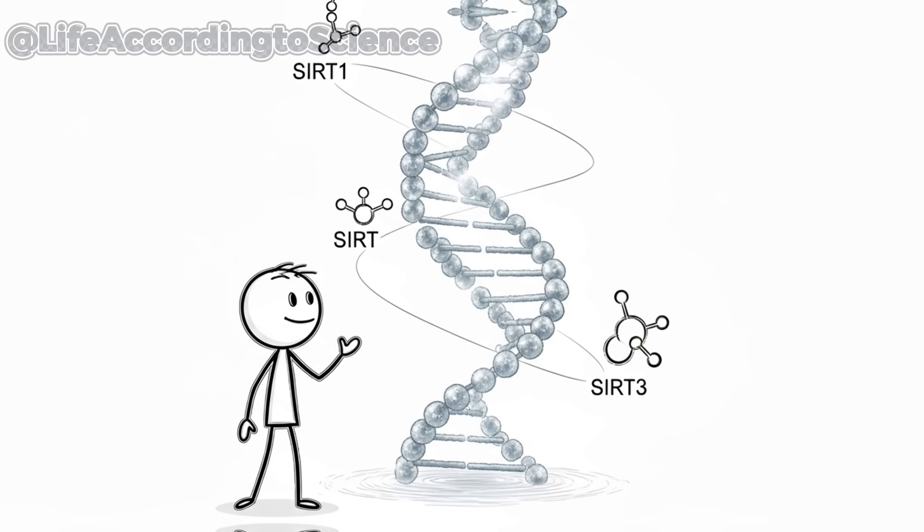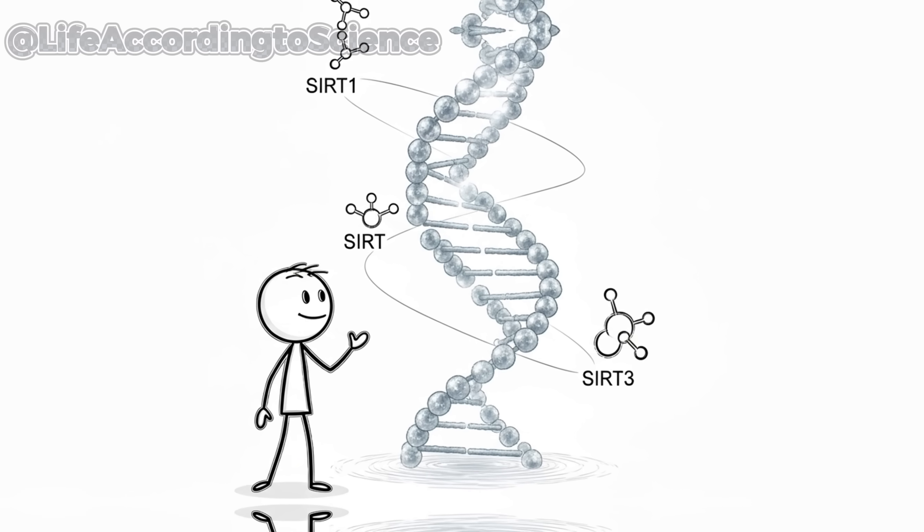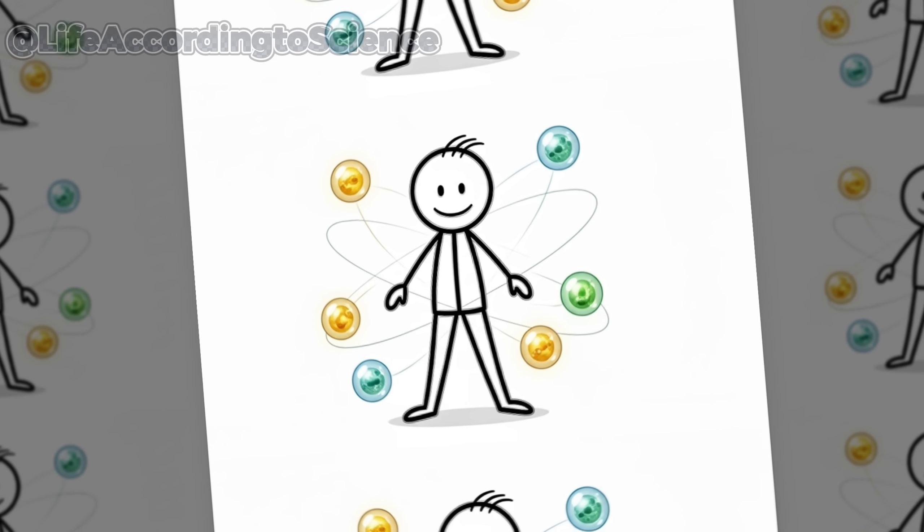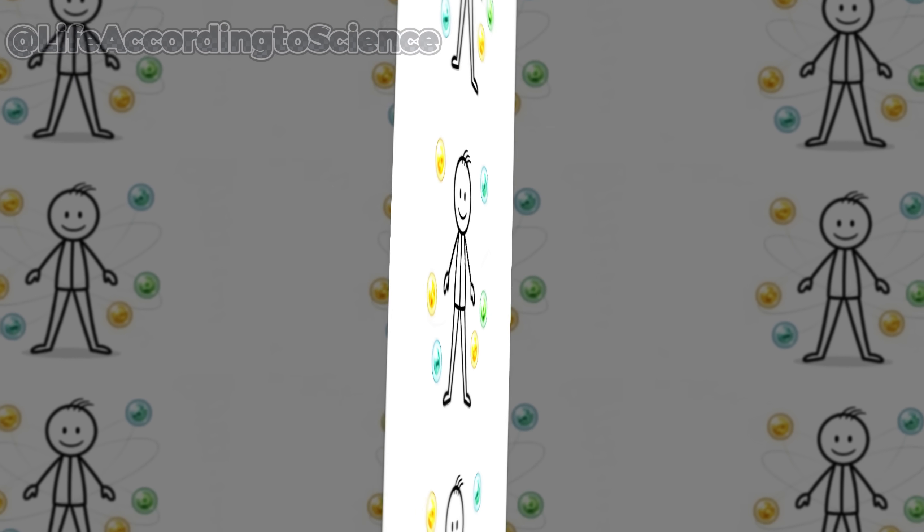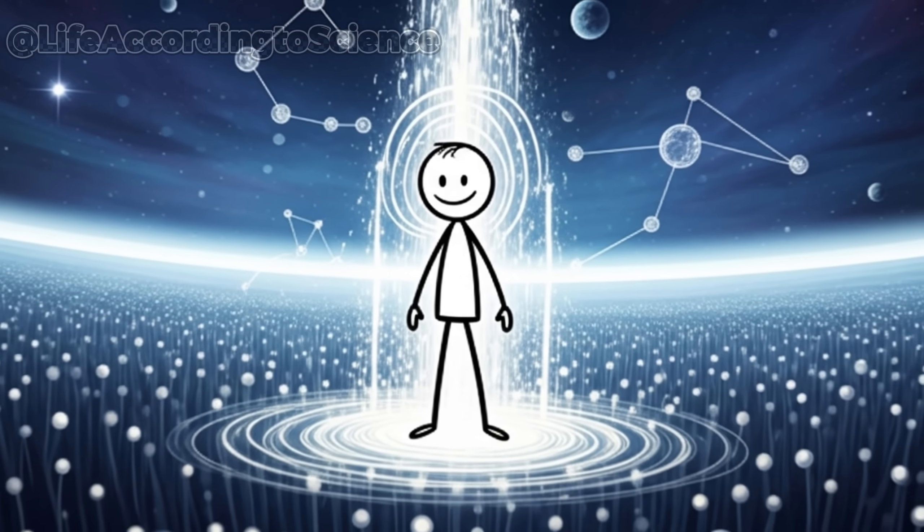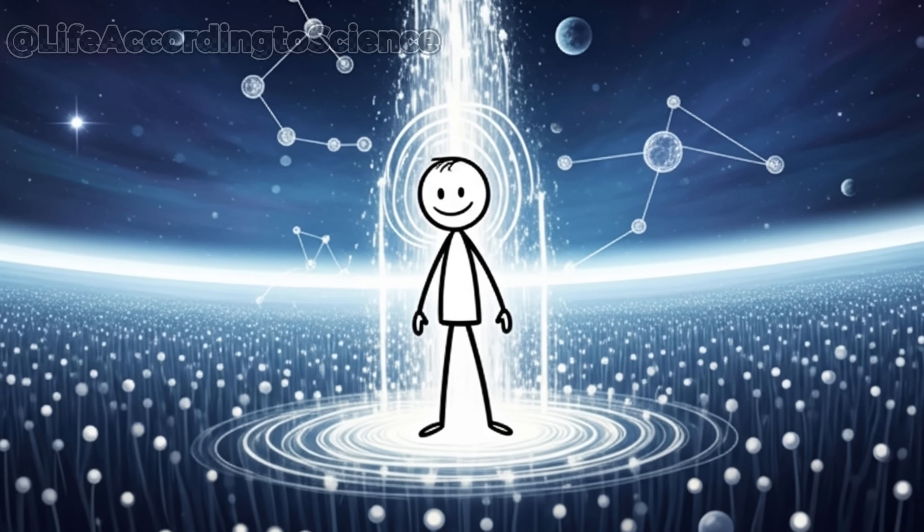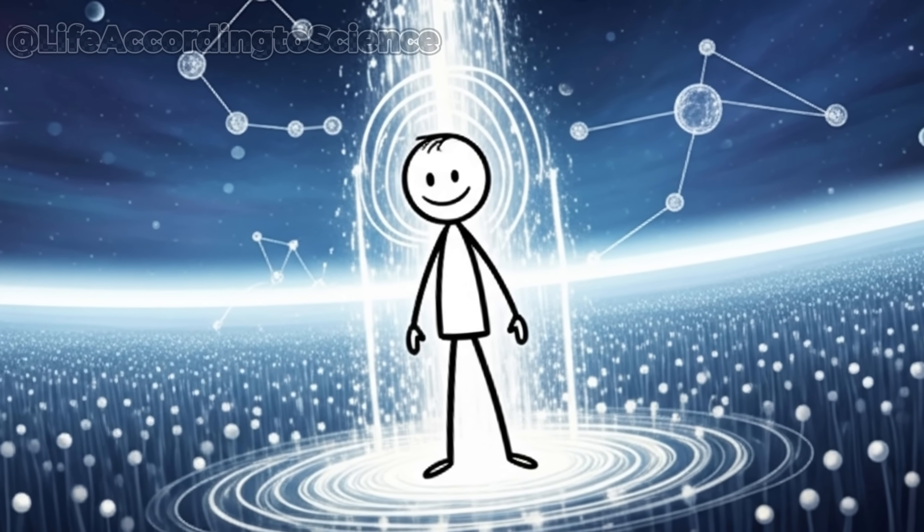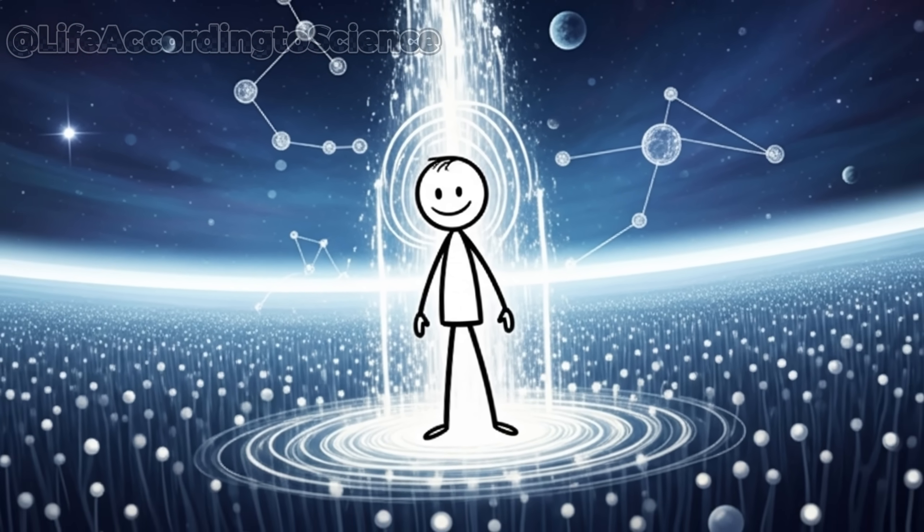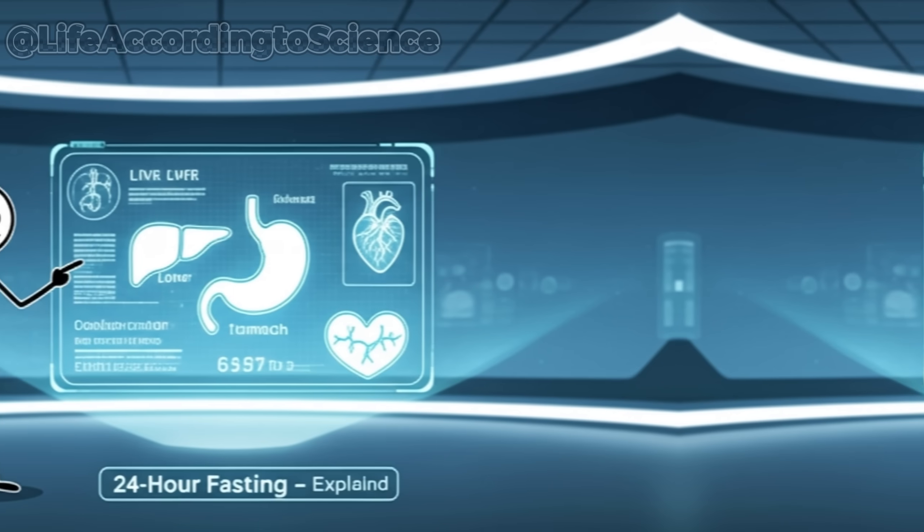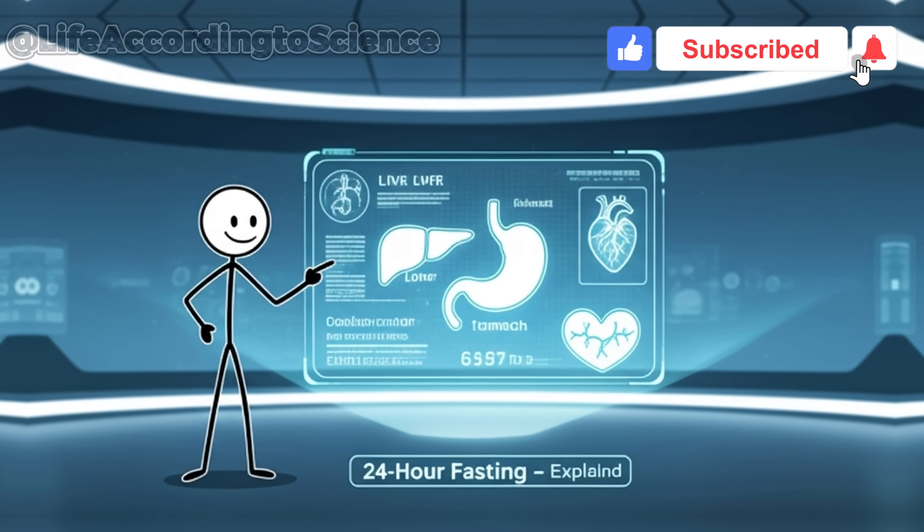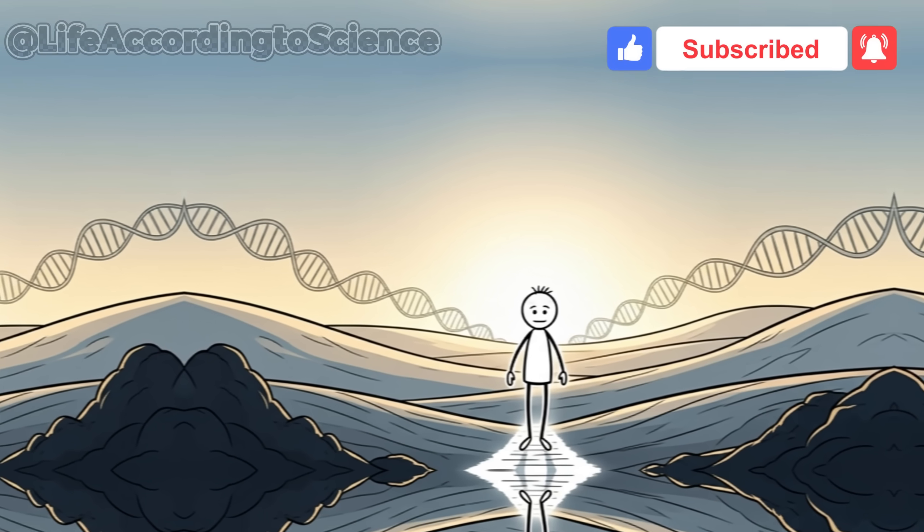Fasting also alters the balance of hormones that regulate mood and energy. Norepinephrine rises, sharpening alertness, serotonin stabilizes, lifting mood, and growth hormone surges, helping the body repair itself. The result is a cascade of renewal that goes far beyond willpower. It's evolution working with you. If you're fascinated by how small habits can reshape your biology, you might want to watch our deep dive on what happens to your organs when you fast for 24 hours. It connects perfectly with what you've just learned.